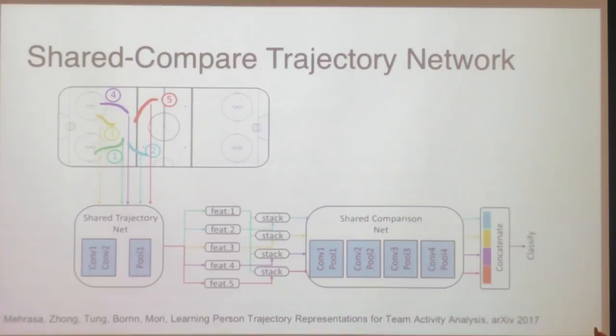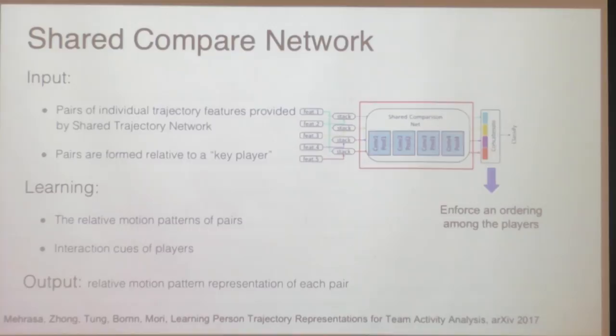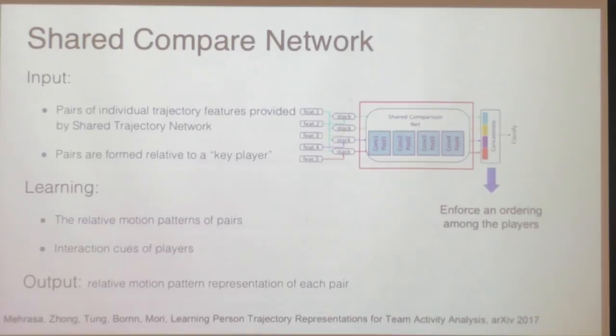Then you do similar things in the comparison network: you take in a pair of trajectory features — analyzing the key person with the ball and another person in the scene — and have conv filters that analyze what relative positions and motions should exist between those players to recognize a particular action. Those parameters can be shared across all pairs of people, though we've also experimented with person-specific features and sorting people by distance to the ball. You can concatenate all of those together and use them for whatever classification task you care about.